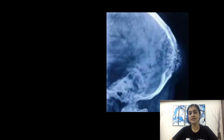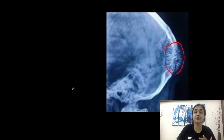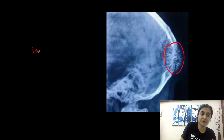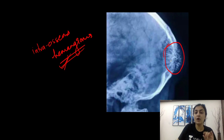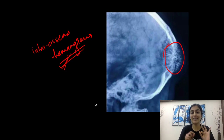What if there is just a focal hair-on-end appearance? The entire bone is not involved — there is a focal swelling producing a focal hair-on-end kind of appearance. Remember, this is produced by intraosseous hemangioma of the skull. Hemangiomas are most commonly seen in the spine, but if seen in the bony calvarium, they produce this focal swelling with focal hair-on-end appearance.